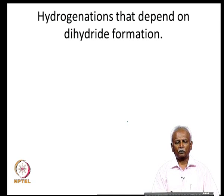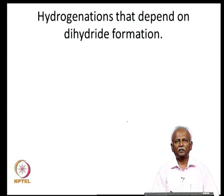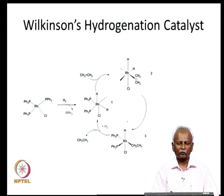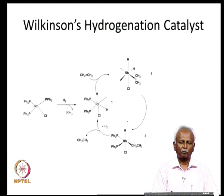Let us talk about reactions that depend on the formation of a dihydride — systems where the oxidation state of the metal changes by +2 units, from M⁰ to M²⁺. In many cases these dihydrides carry out hydrogenation reactions very readily. The classic example belongs to the Wilkinson catalyst, which most of you might be familiar with. This is probably the most popular first example of a hydrogenation catalyst that was discovered.